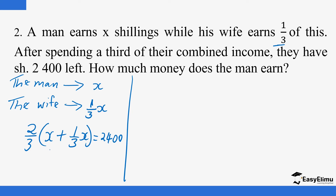Opening the bracket: they spent a third, so two-thirds of the combined income remains equal to 2,400. Opening up the bracket: we have (2/3)x plus — multiplying the numerators, 2 × 1 = 2 and 3 × 3 = 9 — so (2/9)x. That equals 2,400.